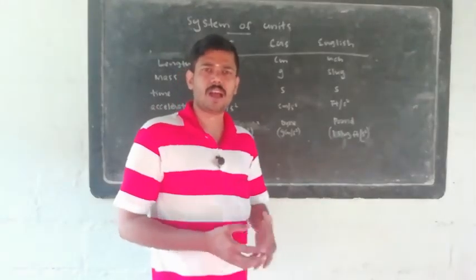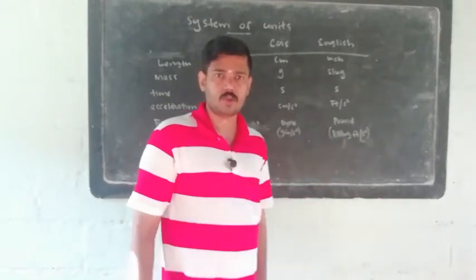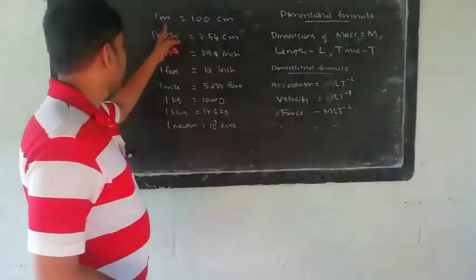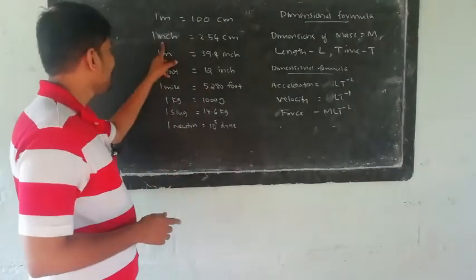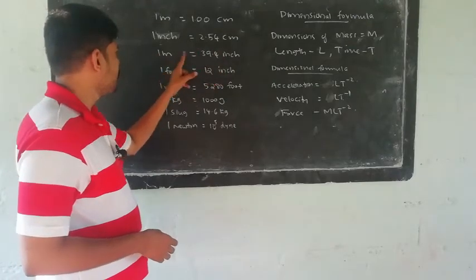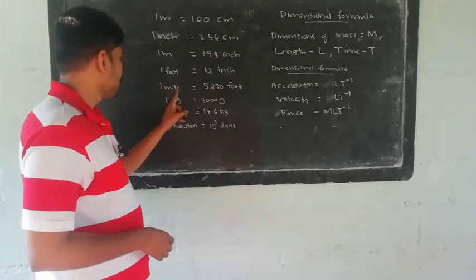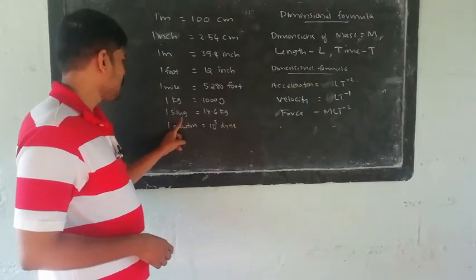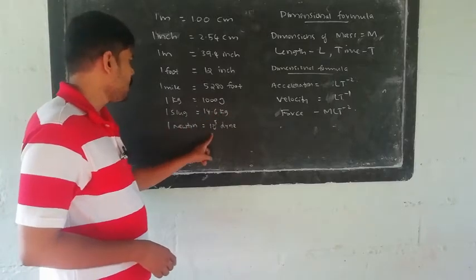Now let us think about conversions. 1 m = 100 cm. 1 kg = 1000 g. 1 inch = 2.54 cm. 1 m = 39.4 inches. 1 foot = 12 inches. 1 mile = 5,280 feet. 1 slug = 14.6 kg. 1 N = 10⁵ dynes.